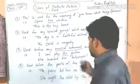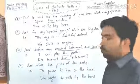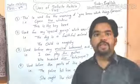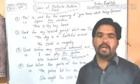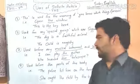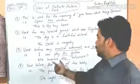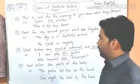'The' is also used before inventions. For example: 'Who invented the telescope?' — so before the name of an invention, 'the' is used.